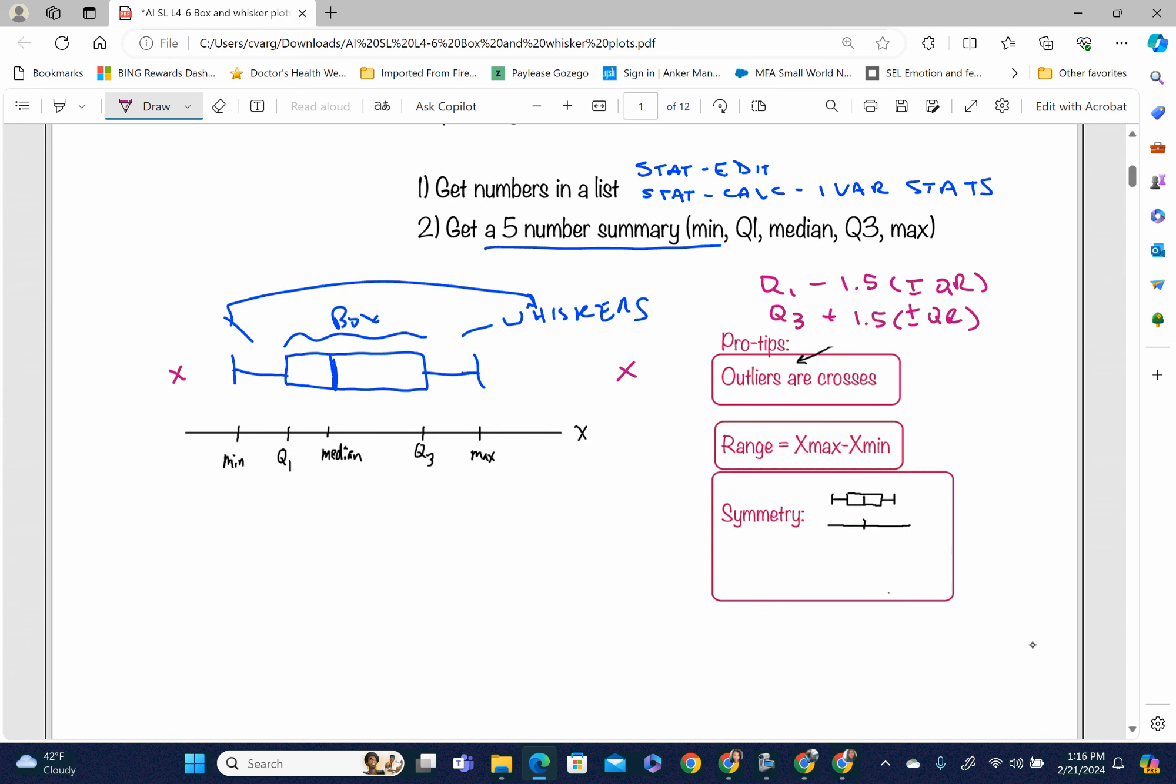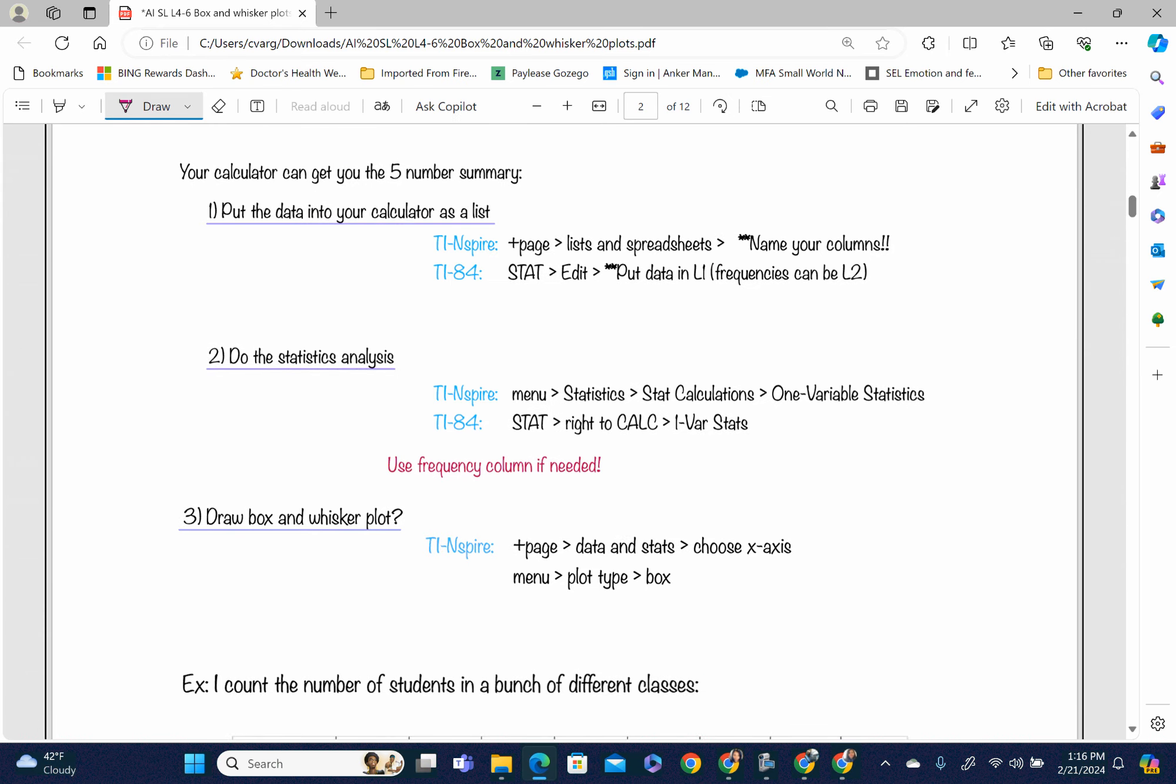Our range is our max minus our min. That is different than our interquartile range. Our IQR equals Q3 minus Q1. We've been doing that a lot. The word symmetry means that our median and our mean are equal or just about equal. If our median and mean are about the same, then they are symmetrical.